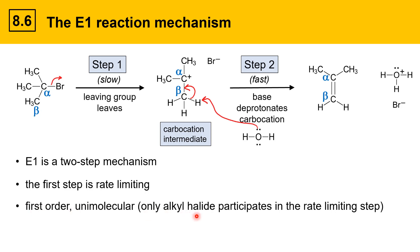Only the alkyl halide participates in the rate limiting step, and therefore the rate law for E1 is just dependent on the alkyl halide. It is K, the rate constant, times the concentration of alkyl halide, and notice that the base doesn't figure into the rate equation.